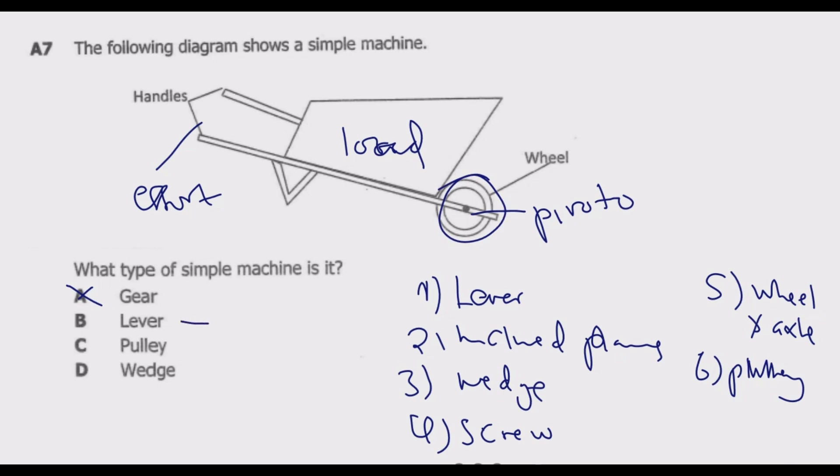Examples of a lever machine are basically we have scissors, then we have a bottle opener, and wheelbarrow itself. So wheelbarrow in this case is a lever. So we see that B in this case is the correct answer.